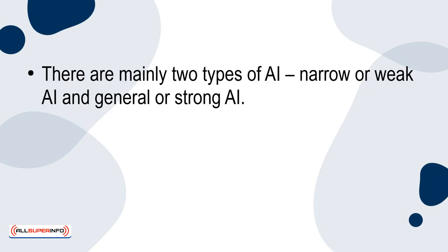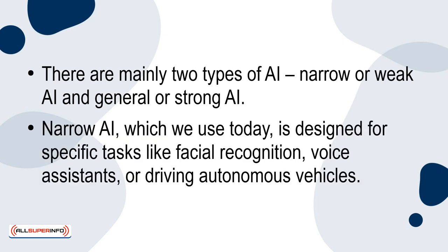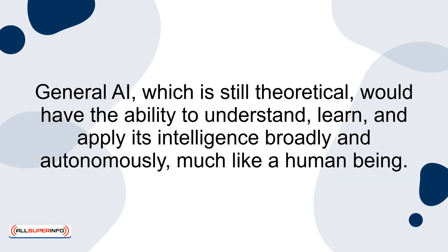There are mainly two types of AI: narrow or weak AI, and general or strong AI. Narrow AI, which we use today, is designed for specific tasks like facial recognition, voice assistance, or driving autonomous vehicles. General AI, which is still theoretical, would have the ability to understand, learn, and apply its intelligence broadly and autonomously, much like a human being.